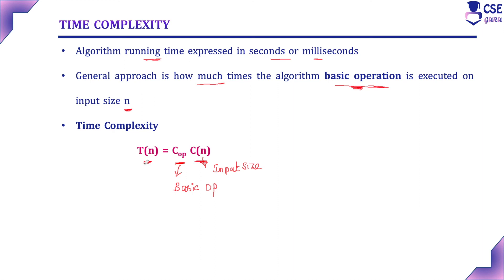The efficiency of an algorithm depends upon two factors: time complexity and space complexity. But space complexity is not a concern nowadays. Only time complexity is the big factor that decides the efficiency of the algorithm, and within time complexity, input size is the major factor. In this session, we have discussed time complexity and space complexity of an algorithm. In the next session, we will discuss the basic efficiency classes.